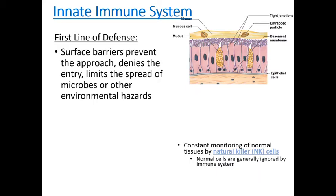The first line of defense is maintaining surface barriers. We can see an epithelium with underlying connective tissue. We've talked about the epithelium in the respiratory and digestive systems — these cells are tightly sewn together by what are called tight junctions, so invaders in theory cannot make their way through into the underlying tissues. Additionally, a lot of the epithelia in our body are covered by mucus, which prevents invaders such as bacteria, viruses, and particles from even reaching the epithelium itself.